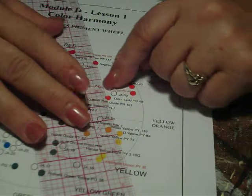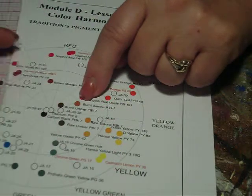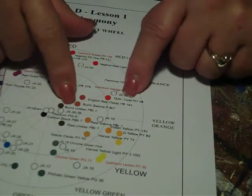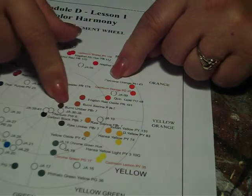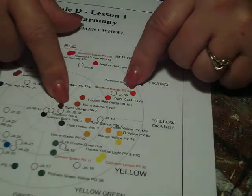Burnt umber is what we use to dull the oranges, which is right here. So it's right there in that same area. And it's in the center of the wheel and it will tone your oranges very well.